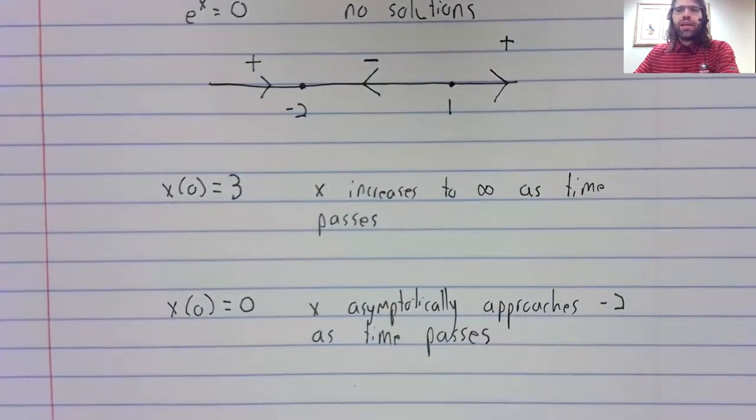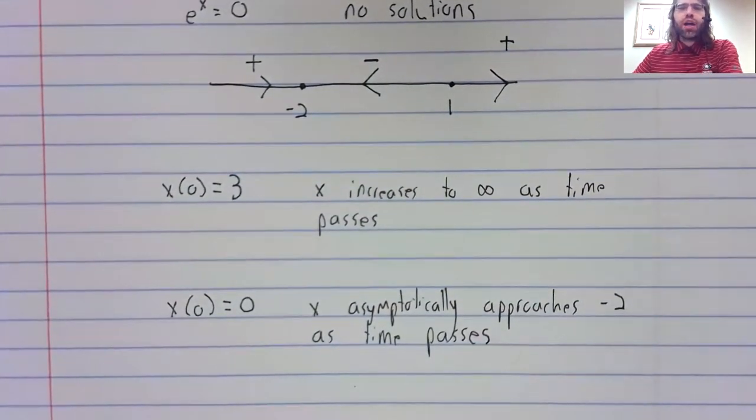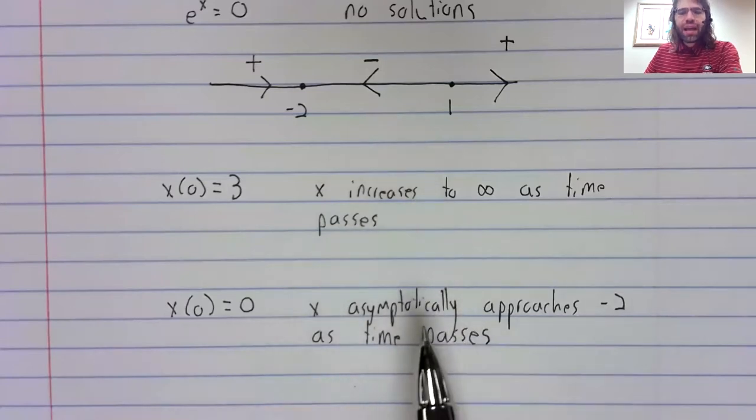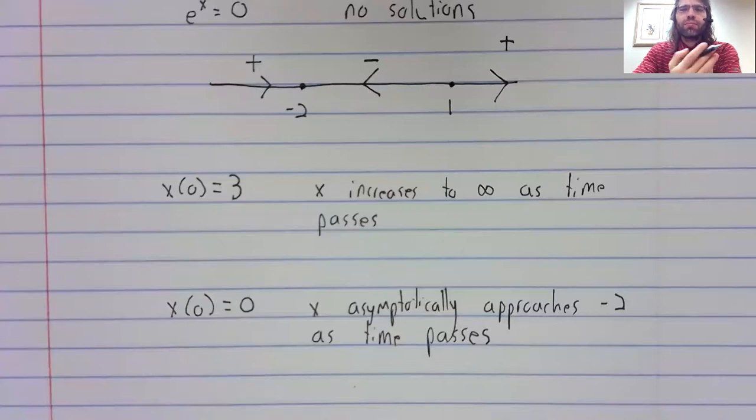So for any initial condition, we can describe in a general sense what happens as time passes. Now, of course, this isn't perfect. What we don't get from this is any quantitative information. How fast is x going to infinity? How fast is x approaching negative two? We don't get that kind of data. We just get sort of long term descriptive data of what happens. But sometimes that's all you need.